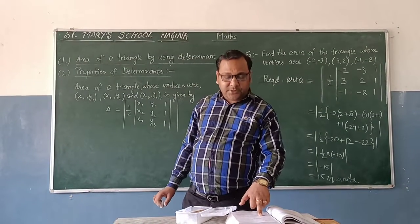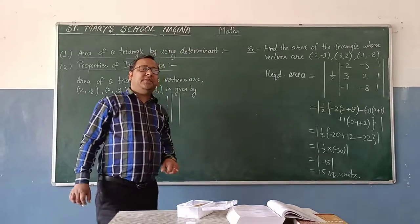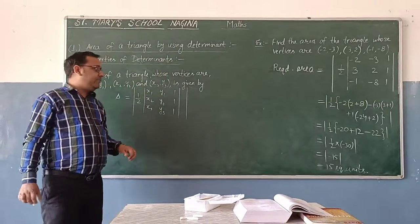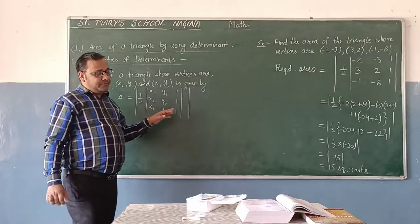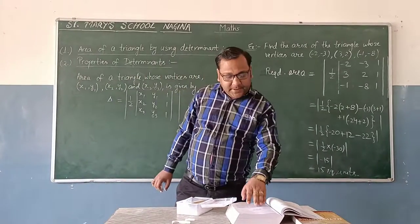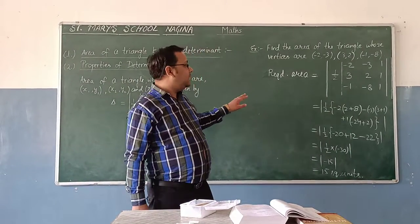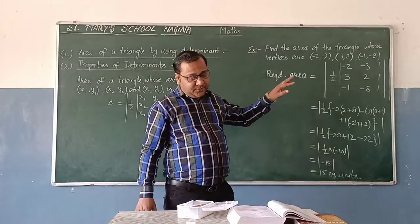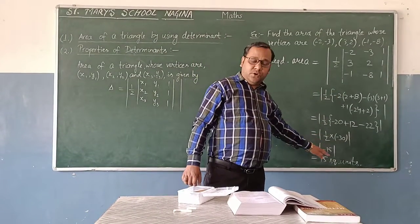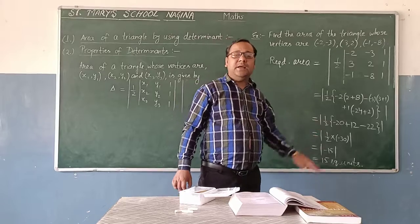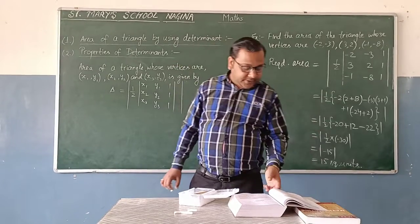So by this example you can understand how we are finding the area. In exercise 5c such type of questions are given. One more type of problem is there in this: you have to show the given three points are collinear. So given three points will be collinear if area, if you find the area by these three points, by these three points if you find the area and its value comes zero, if its value is zero then you can say the given points are collinear.